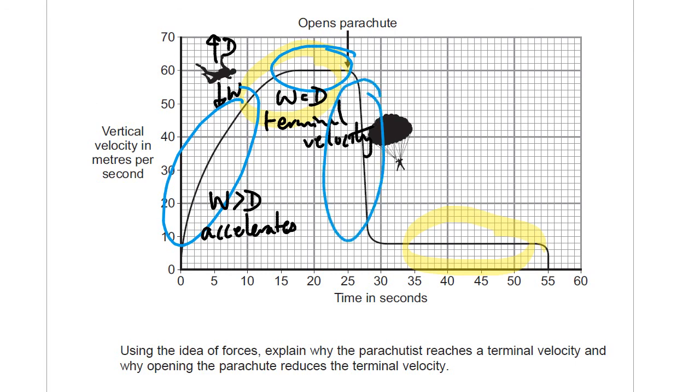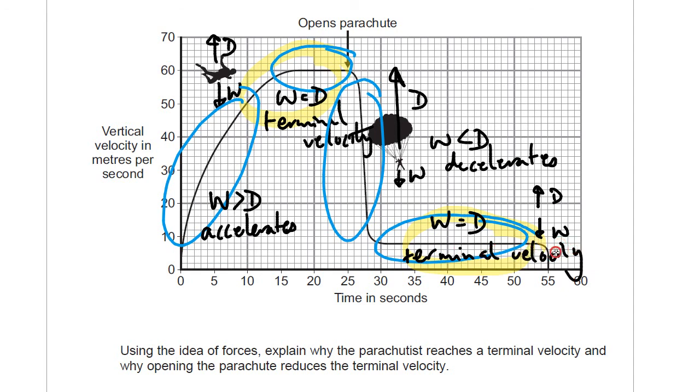Then he opens the parachute, and all of a sudden you've still got the same weight. You've got a massive drag, a massive air resistance. So here, weight is less than drag, or drag is greater than weight. Therefore he decelerates. Until finally he reaches this new terminal velocity, this new lower terminal velocity down here. But it's a terminal velocity nonetheless, because weight is equal to drag. Because he's decelerated, the drag is once again equal in size to the weight. Okay, so this is a new and lower terminal velocity. Okay, lots of ways to write that, but those are the key ideas that you need to get yourself the six marks.